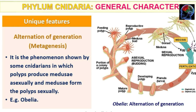The next unique feature is Alternation of Generation, which we call metagenesis. In metagenesis, the polyp reproduces asexually to produce medusa, and the medusa reproduces sexually to give rise back to the polyp.